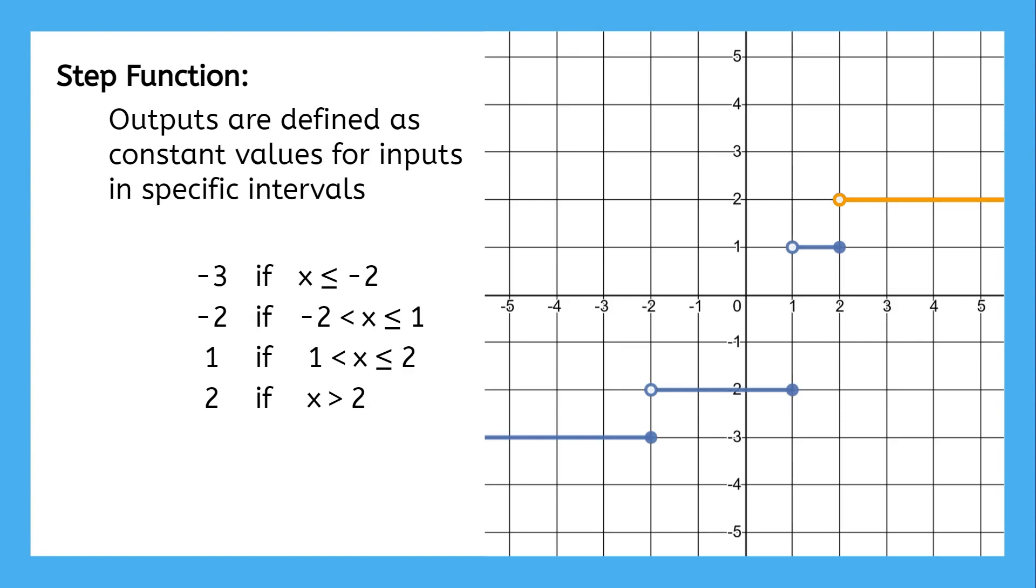For each interval of inputs, the output was a constant, never-changing value. In fact, what we just wrote there is the function for this graph. This is how piecewise functions are written. Each piece broke it up into input intervals.